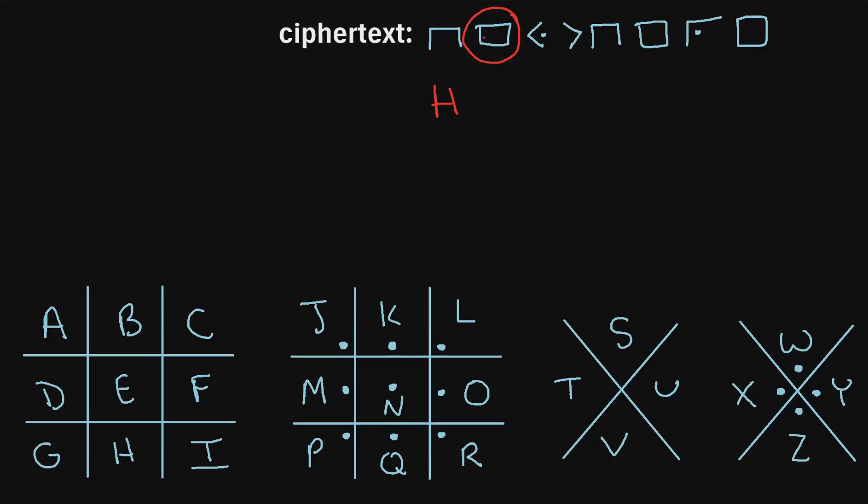Then we can find this symbol right here. So that's a square. So that corresponds to this E right here. So that'll be our next letter. And then we can find this symbol. So it looks like that corresponds to the Y over here since it has a little dot right here. So we can write Y as our next symbol.